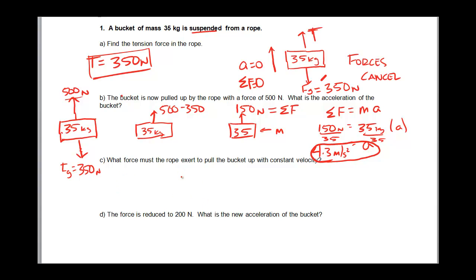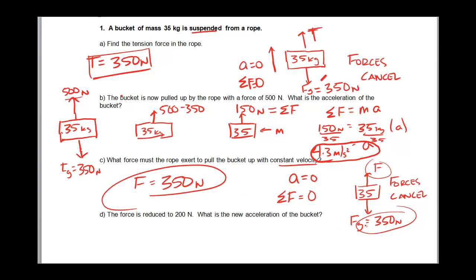So now we want to know what force the rope has to pull to go up at a constant velocity. Let's go over here. We have 35 kilograms. I don't know how much force is up. And I still have the force of gravity, which is 350 newtons, acting down. Now if we're going at a constant velocity, the acceleration has to be zero. If the acceleration is zero, the net force has to be zero. And if the net force is zero, we once again have to have our forces cancel. Which means the upward force has to be equal to the downward force. So that upward force is equal to, again, 350 newtons. That's what it takes to give me a constant velocity.